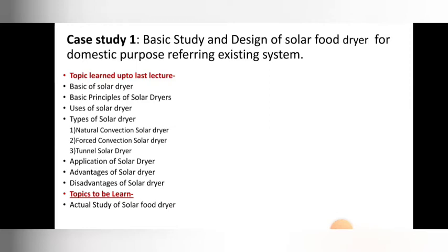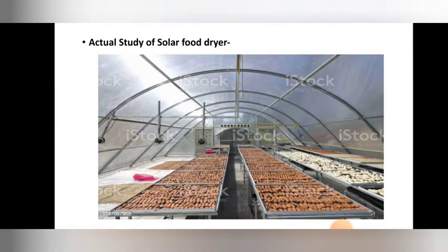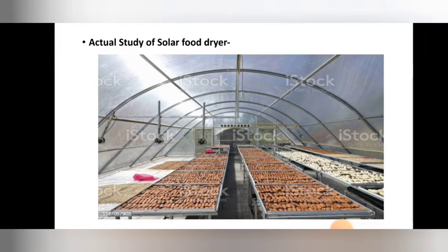We also covered applications, advantages, disadvantages, and limitations of the solar dryer. In today's lecture, we are going to see how solar energy is actually used in drying foods of different types. I have shown one picture where you will see the drying of some foods in a solar dryer using solar energy. I am going to show you a video related to that solar dryer system so you will easily understand how it works and the actual case study.